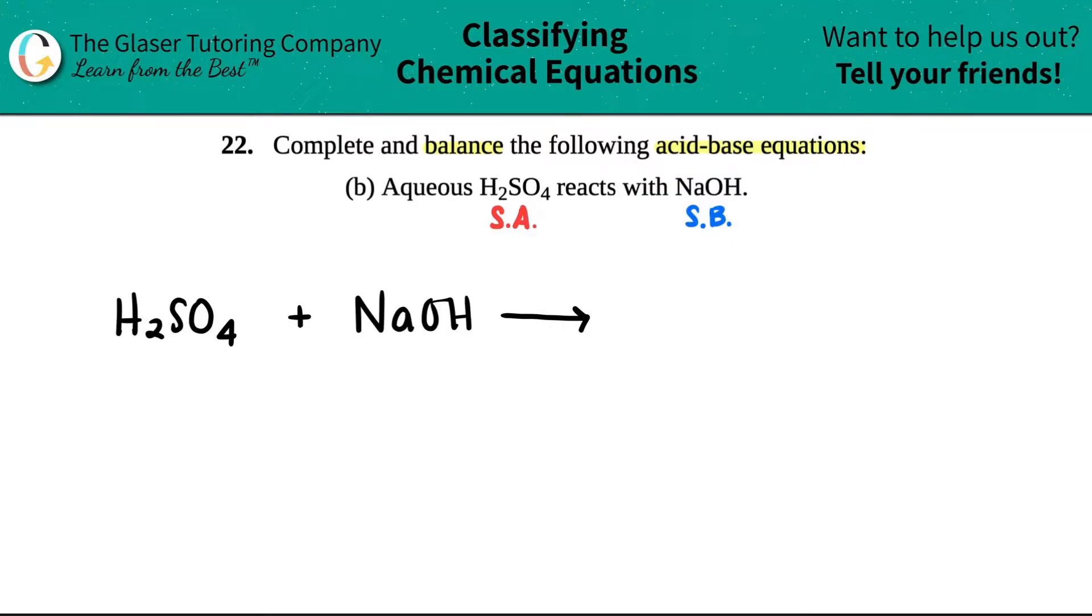And when we do double displacements, we do outers with outers, inners with inners. And I'll show you what that means in two seconds. The first thing that you want to do is you want to break up this compound into its ions, right? Remember, there was always two ions that came together to make a certain compound. We need to know what those two guys are.